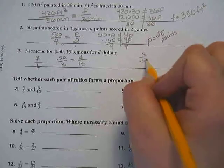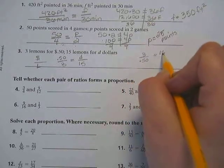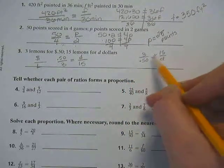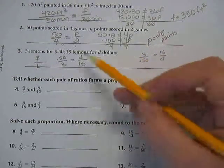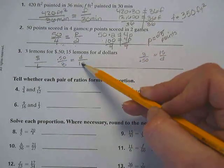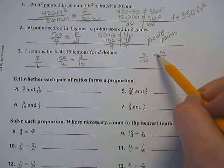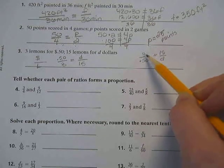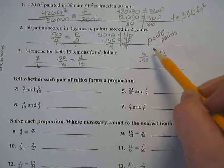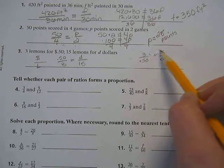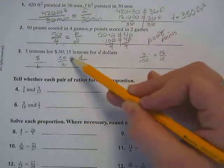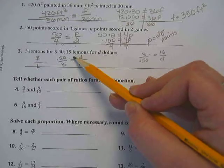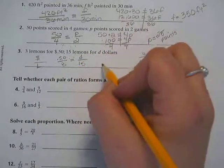Now, like I said, you could have it over 3 over 15 equals 50 over D. Either way, you'll notice if you do the cross products, here you do 50 cents times 15. Here you do 50 cents times 15. So it doesn't matter what you have on top, as long as they're both the same on top. Here the number of lemons is both on top. Here the price is both on top. Does that make sense? Yeah.